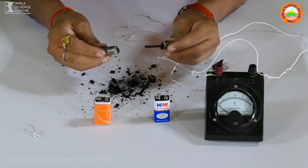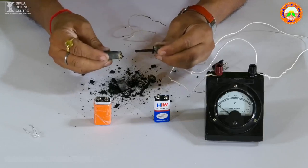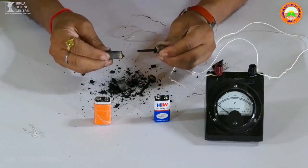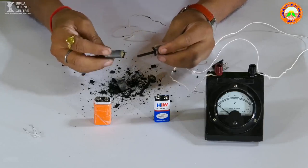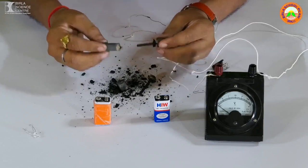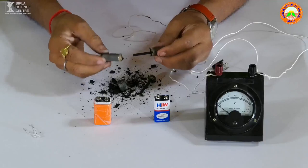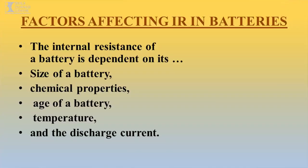Thirdly, temperature: more the temperature, less will be the internal resistance; in cold, the internal resistance increases. In batteries, the size of a battery also affects the internal resistance. The chemical properties, the age of a battery, temperature, and the discharge current are all factors which affect the internal resistance of a battery.